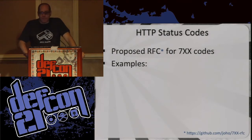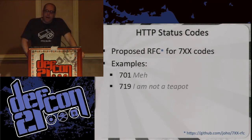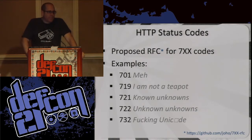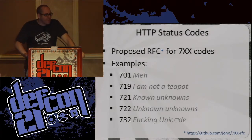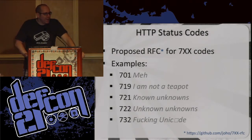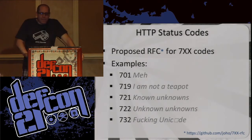There's also a wonderful RFC worth reading — the 700 codes by John Barton. If you go to his GitHub page, there's an entire section. I like the 'meh' and 'I am not a teapot.' There are like 300 of these things, so I have no idea how they squeezed it all into the 700 range. I really hope they accept that RFC and start implementing it.